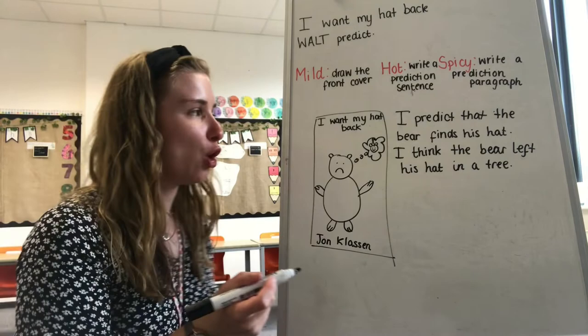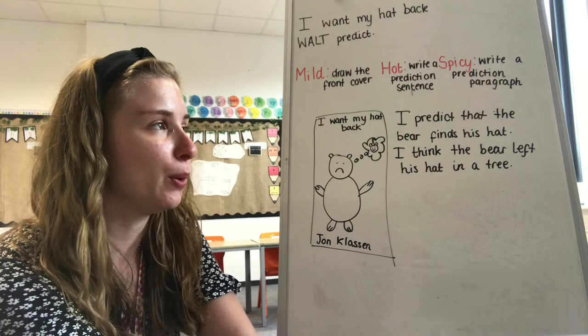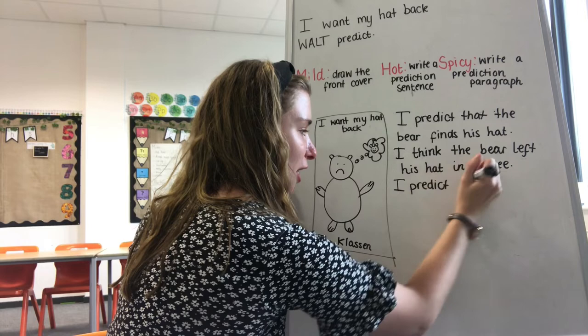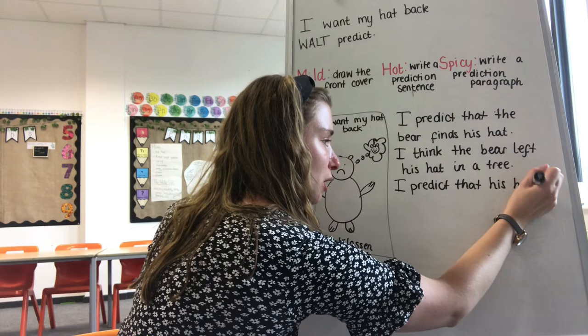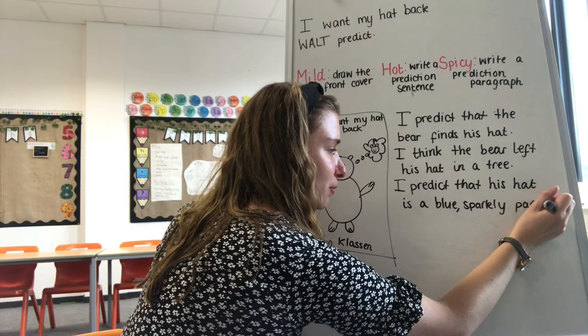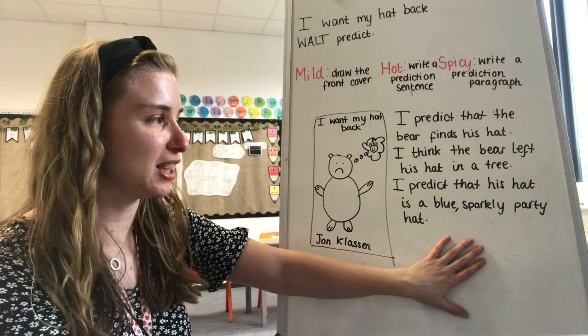Remember my full stop at the end. Now I've got two sentences and I need to think of one more. I'm going to think about what I think the hat looks like. I already think it's a party hat with a little flag, but what colour might it be? Purple, pink, rainbow? I think I'm going to go with a blue sparkly hat. So: I predict that his hat is a blue sparkly hat. So I've got my paragraph: I predict that the bear finds his hat. I think the bear left his hat in a tree. I predict that his hat is a blue sparkly party hat.